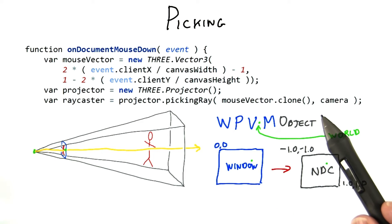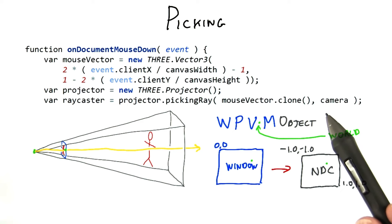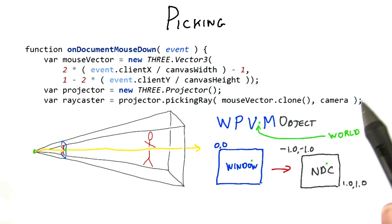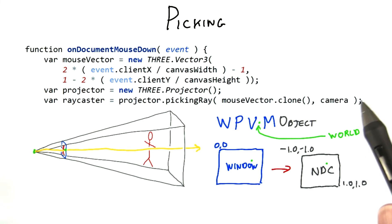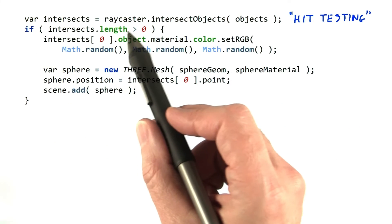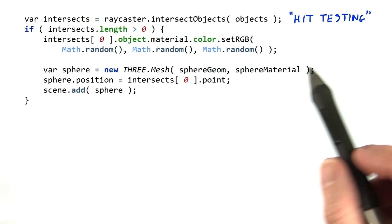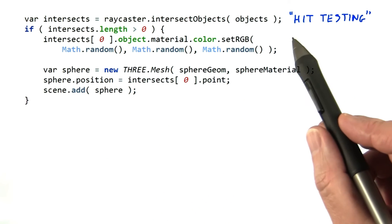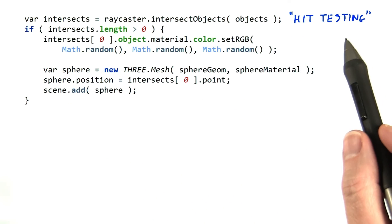Ray casting is like ray tracing, except you only trace rays from the eye into the scene and no further. No new rays are spawned from intersections. Once we have this ray caster object, we can perform picking, also called hit testing.